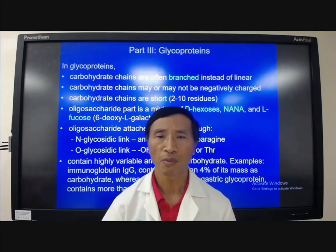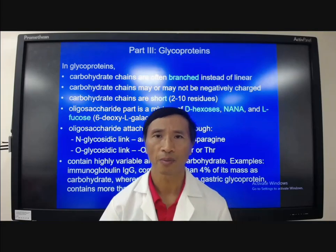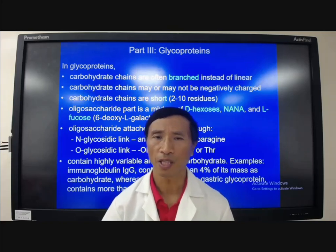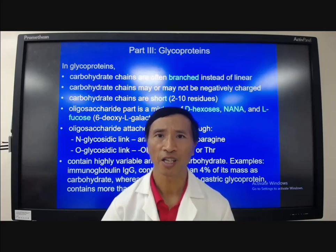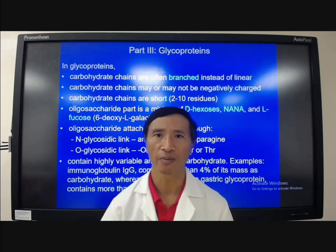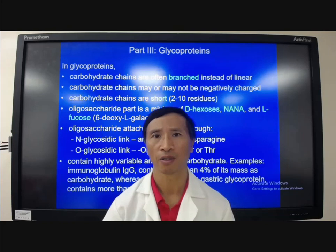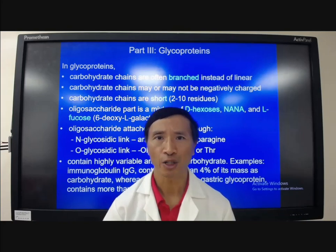Now let's move to part three. We will look at glycoproteins. In glycoproteins, carbohydrate chains are often branched instead of linear. They may or may not be negatively charged. They are short.